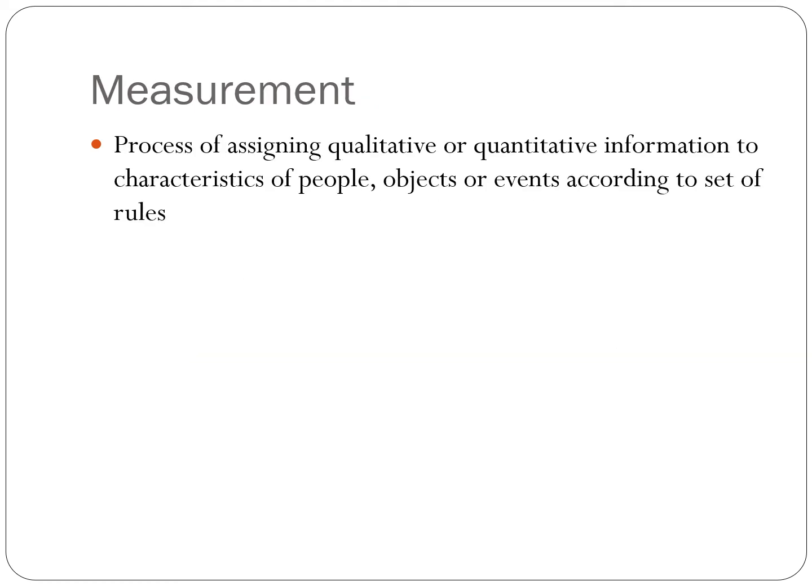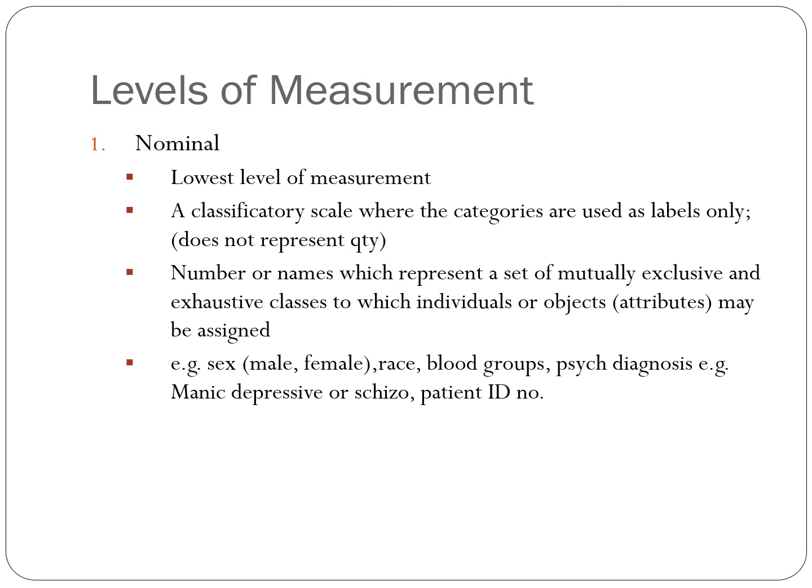Measurements are processes of assigning qualitative or quantitative information to characteristics of people, objects, or events according to a set of rules. Levels of measurement are the following. Nominal is the lowest level of measurement — a classificatory scale wherein the categories are used as labels only. Numbers or names represent a set of mutually exclusive and exhaustive classes to which individuals or objects may be assigned. Examples include sex, race, blood groups, diagnosis, etc.